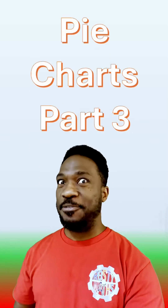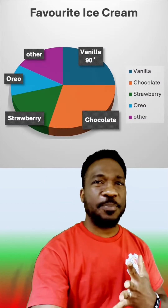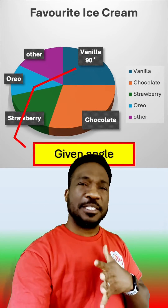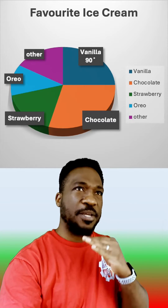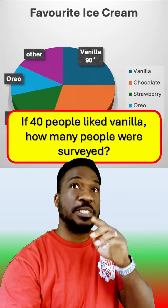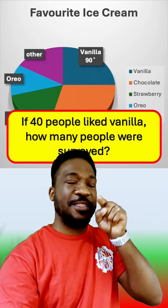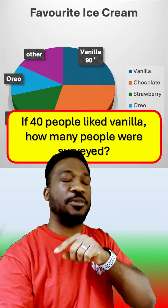Hello everybody and welcome back to the channel! So today we are going into a pie chart part three. Now we have a unique situation here. We have a pie chart again — there it is up there — and this time they've given us the angle but they've also told us how many people are in that part of the circle.